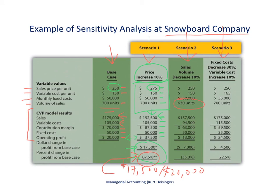If fixed costs go down by 30% — from the original $50,000 to $35,000 — and if variable costs go up by 10%, so instead of $150, we would see $165 per unit for variable costs. So these are different scenarios.